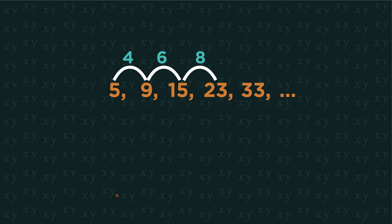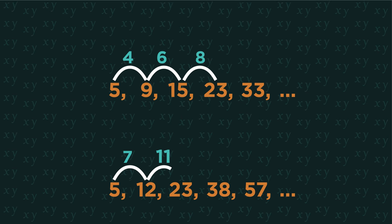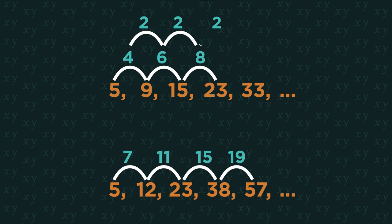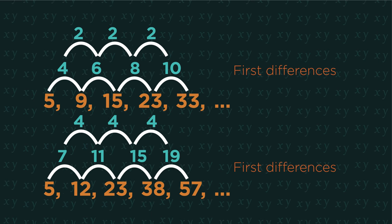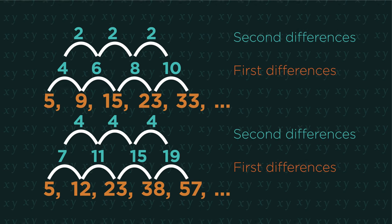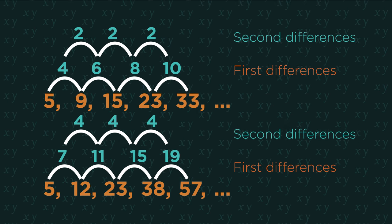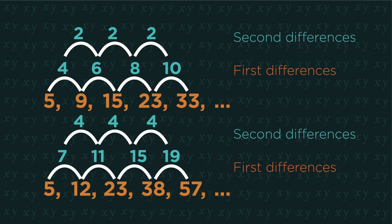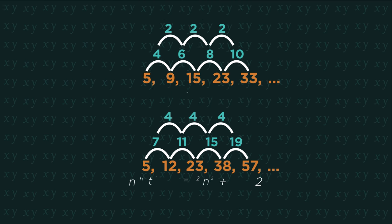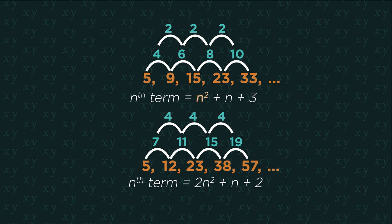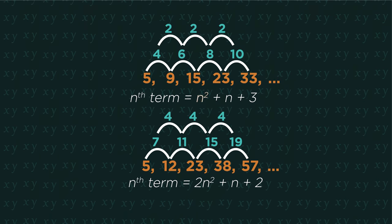Let's investigate these sequences. The difference changes every time. But now look at the second differences. If the second difference is constant, the sequence is quadratic. This means it contains an n squared term. So let's have a look at how to find the nth term of quadratic sequences.